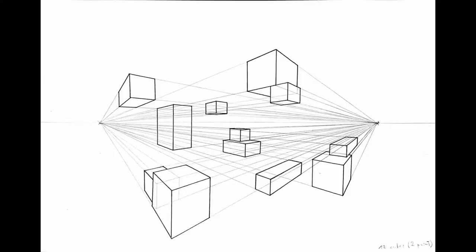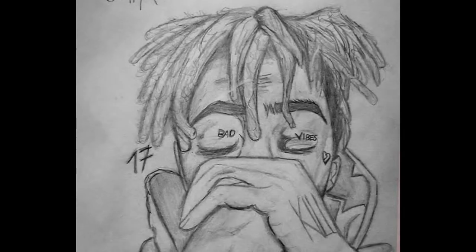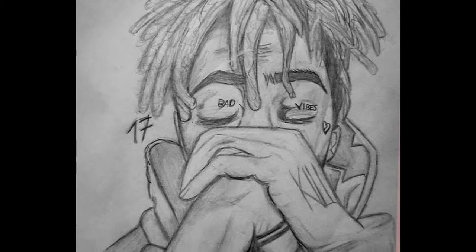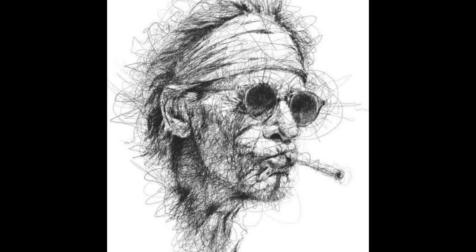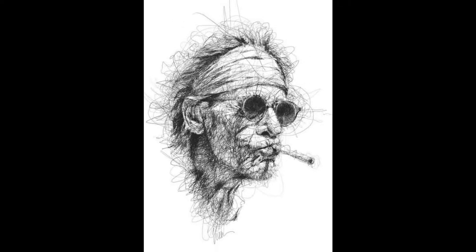Every line on a canvas means something. Quality lines are clean and structured; quantity of lines just means lots of messy, hairy-looking lines. Once you understand the rules, you can comfortably break them. Professionals who use messy lines as their art style — if you're a beginner and you say 'that's my art style,' you're deceiving yourself, because you won't be able to pay attention to other fundamentals.